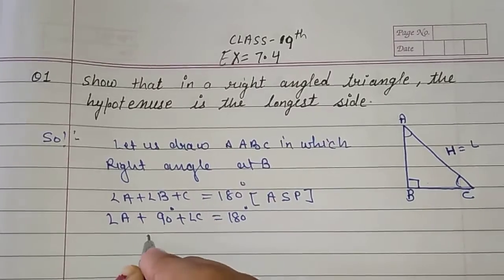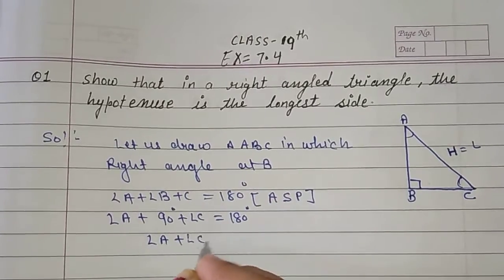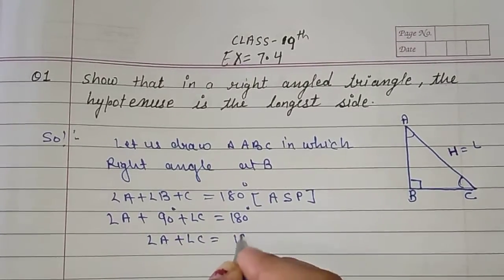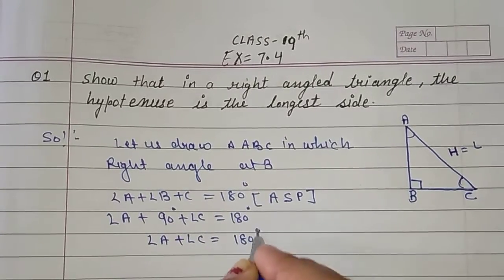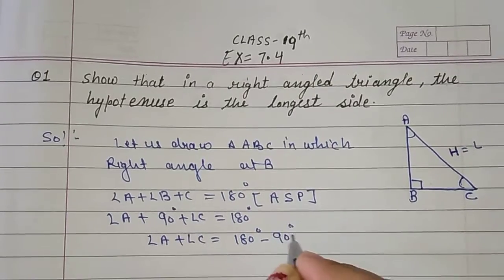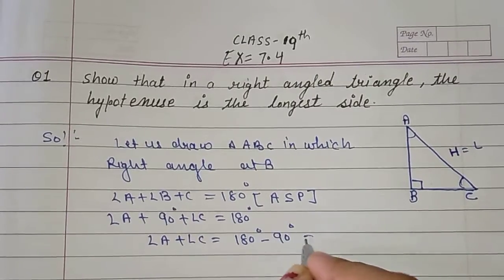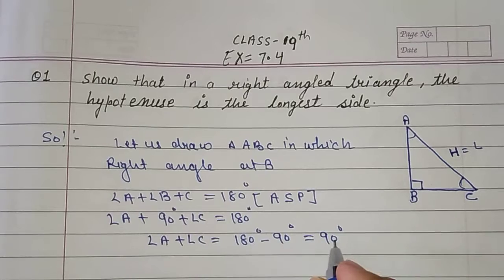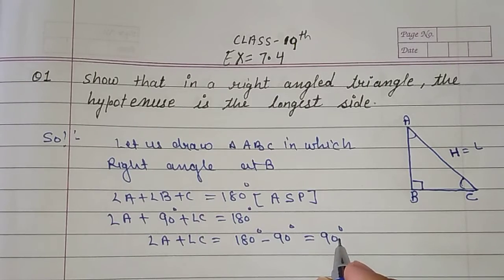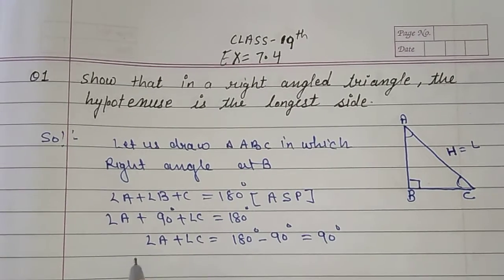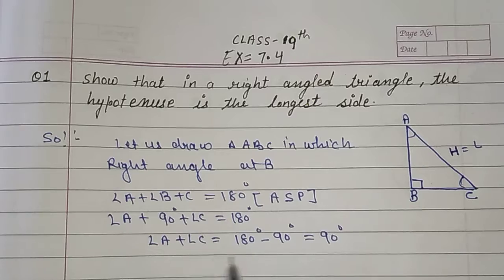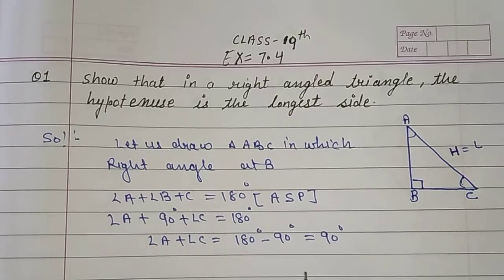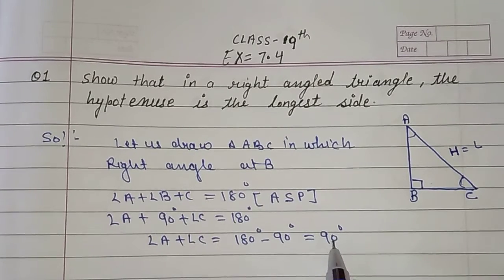So, angle A plus angle C is equal to 180 degrees minus 90 degrees, which means the sum of angle A plus angle C is equal to 90 degrees. So angle A and angle C are acute angles, because the sum of these two angles is equal to 90 degrees.